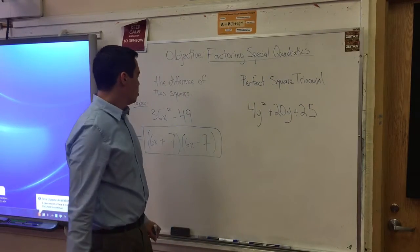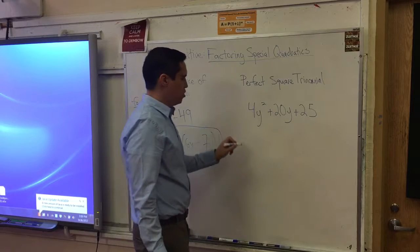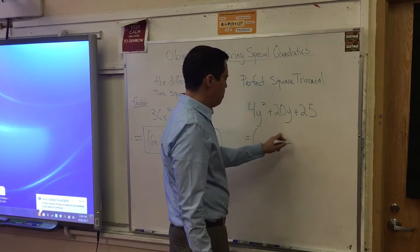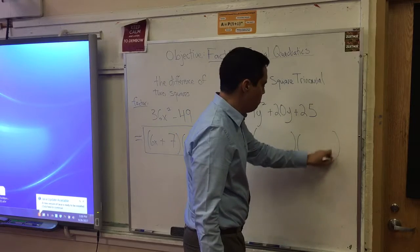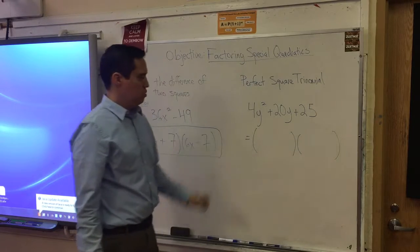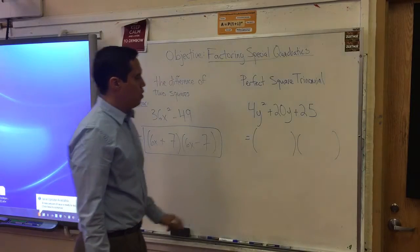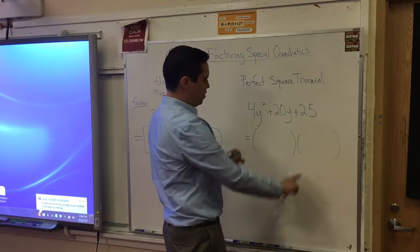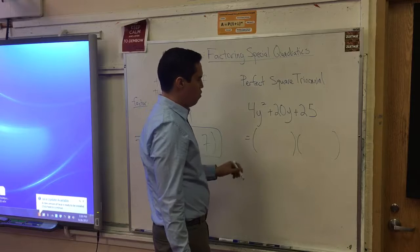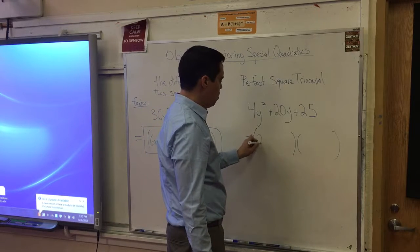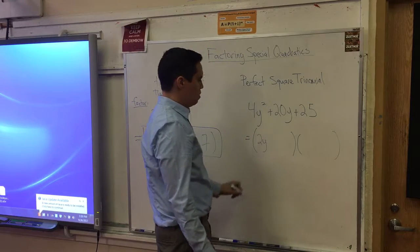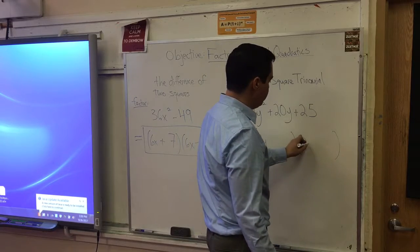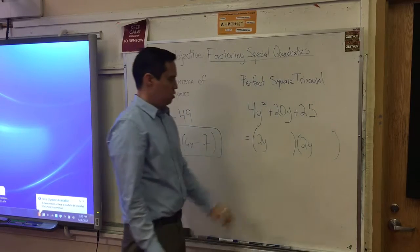So when we are asked to factor this, we're going to come up with an equivalent form of this quadratic where your perfect squares will give you the form of this. The square root of 4y squared is 2y.